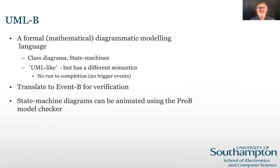UML-B provides a diagrammatic modelling interface for Event B consisting of class diagrams and state machines. It is UML-like, but is designed to fit well with Event B, so it has some different semantics from UML. For example, there is no concept of external trigger events or run-to-completion in state machines. Transitions are simply fired spontaneously when their guards are true. The diagrams automatically generate Event B for verification using theorem provers. For validation, state machines can be animated using the PRO-B model checker.